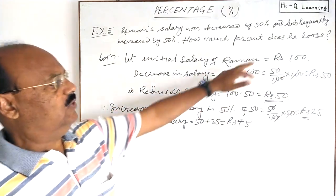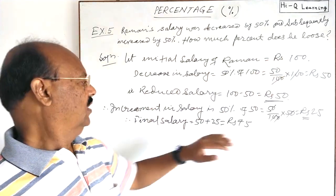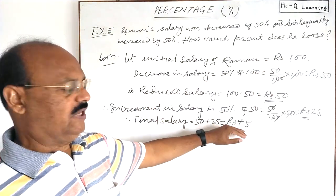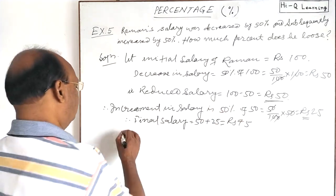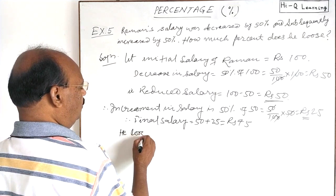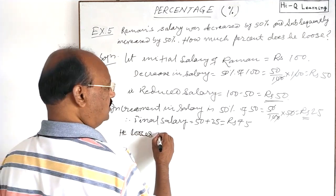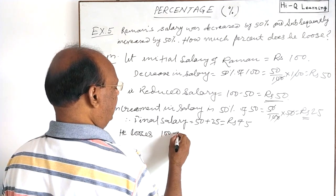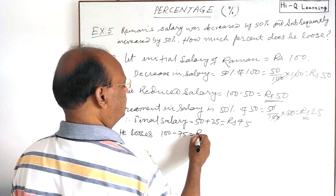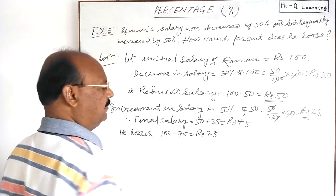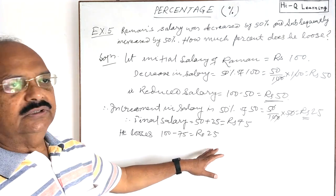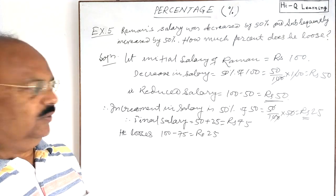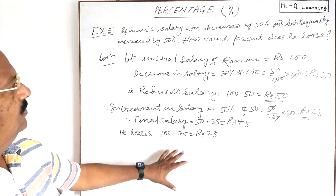Now we have to calculate how much percent does he lose. Initially salary was rupees 100. Finally salary has become rupees 75. So how much he loses? In total he loses 100 minus 75, is equal to rupees 25.